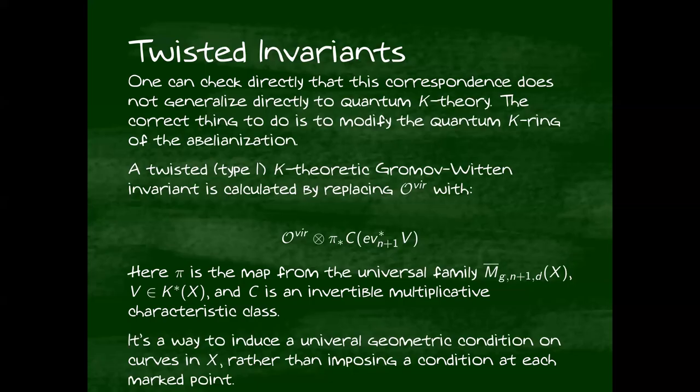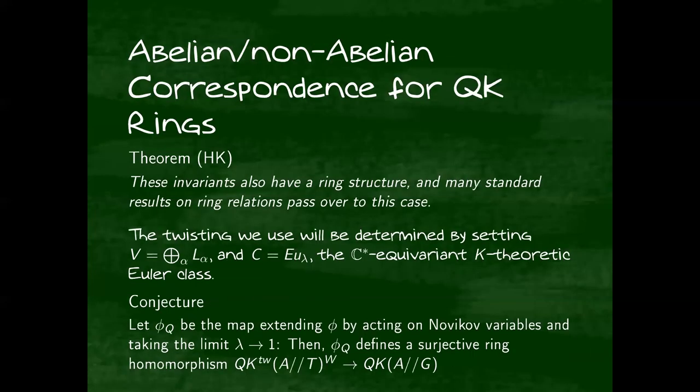We'll have to choose one of these twistings, and this is supposed to ideally give us a setting in which the abelian non-abelian correspondence holds. The first thing to check is, do these twistings still give you a ring structure? Yes, this is something I approved.